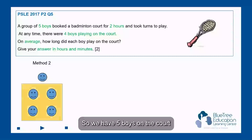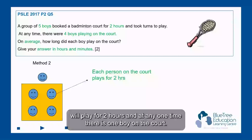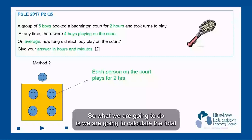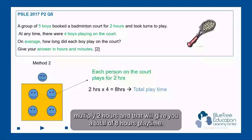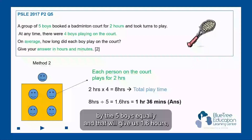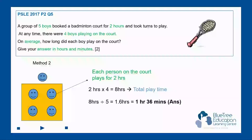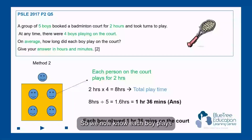We have five boys on the court, and at any one time there are four boys playing for two hours. So we calculate the total amount of playtime by taking four boys multiplied by two hours, which gives a total of eight hours playtime. With eight hours, we divide equally by the five boys, and that gives us 1.6 hours, which is also equal to one hour and 36 minutes. So each boy plays one hour and 36 minutes on the court.